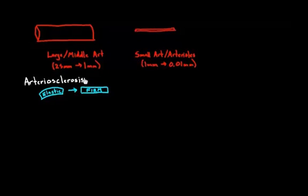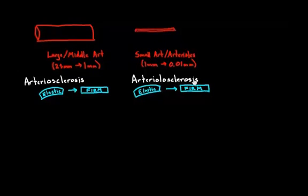And in fact, a very similar thing happens on the other side with the small arteries and arterioles. They also can have very similar kind of change, and they can go from being very elastic to becoming very firm as well over time. And they lose that elasticity. And when it happens in the small arteries or arterioles, we call that arteriolosclerosis. So this is the difference, right? Very similar things, kind of similar processes, but one is in the smaller arteries, one is in the larger and middle-sized arteries.